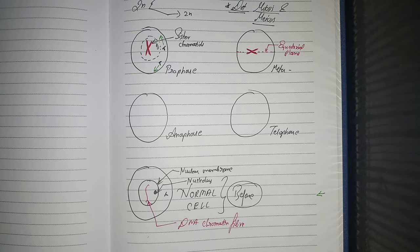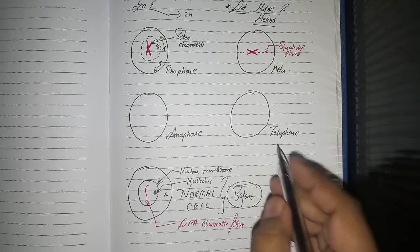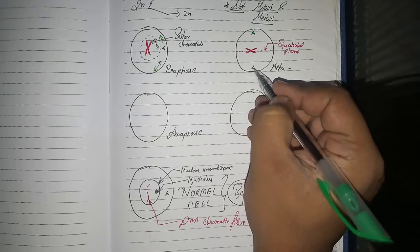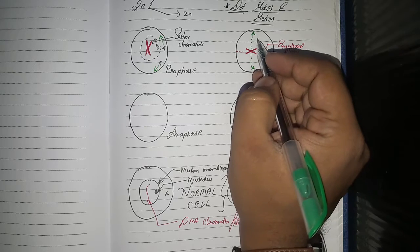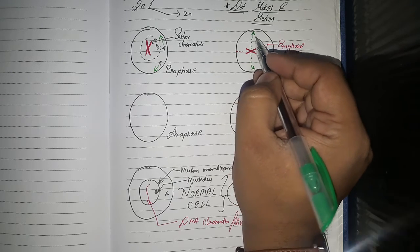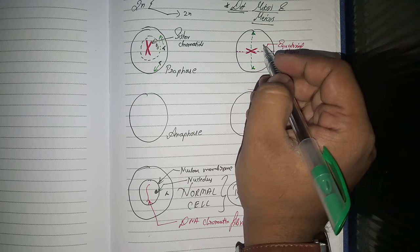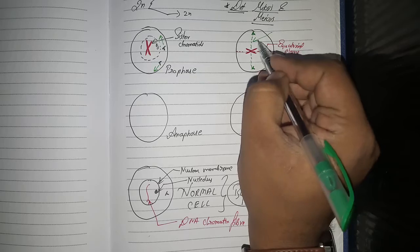In metaphase, you can count all the chromosomes perfectly because they are clearly visible. Also important: the centrioles start making spindle fibers. The spindle fibers get connected from the centromere to the centrioles.